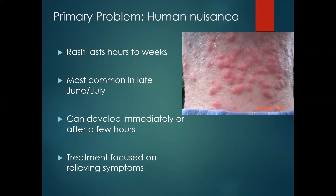Rashin can last hours or weeks — even months in some individuals, although I have a feeling that's people coming into contact with more hairs. It's most common in June and July, when the caterpillars are out and active and the most hairs are present. Most treatments are focused on relieving symptoms.